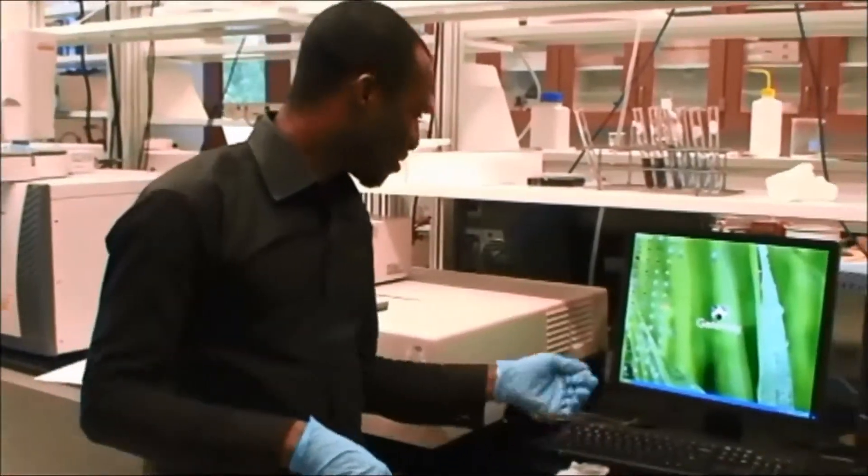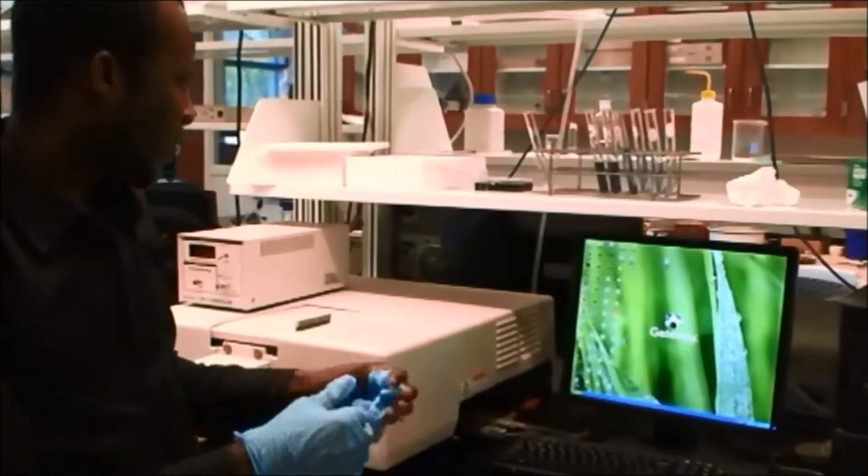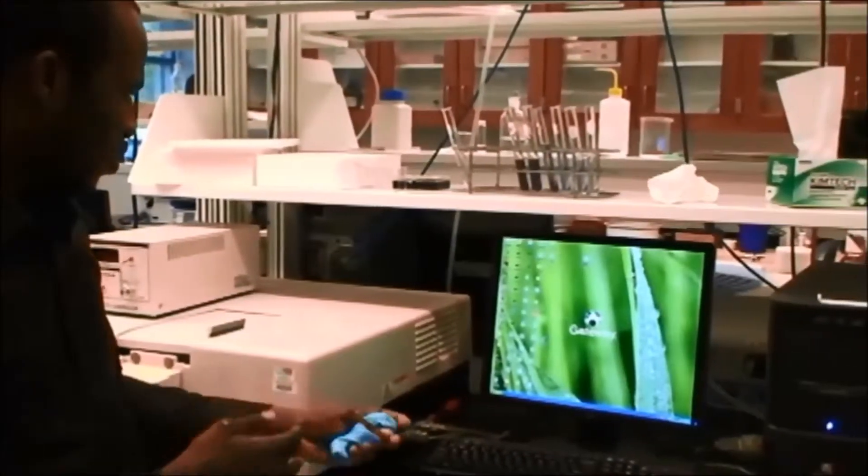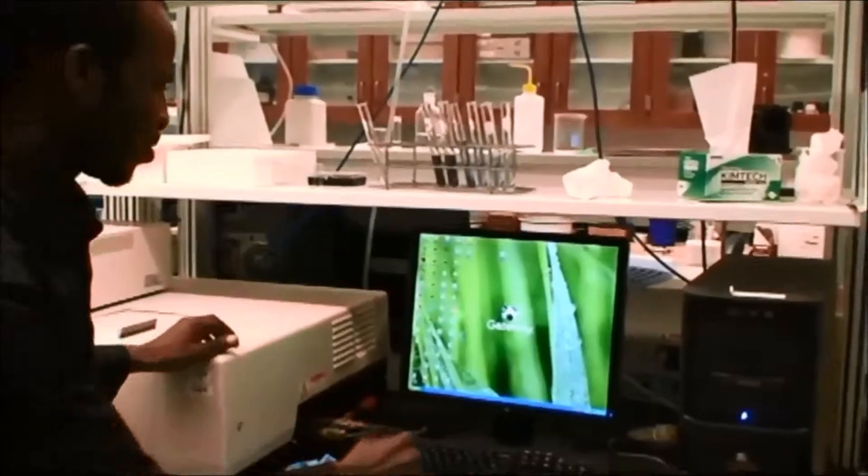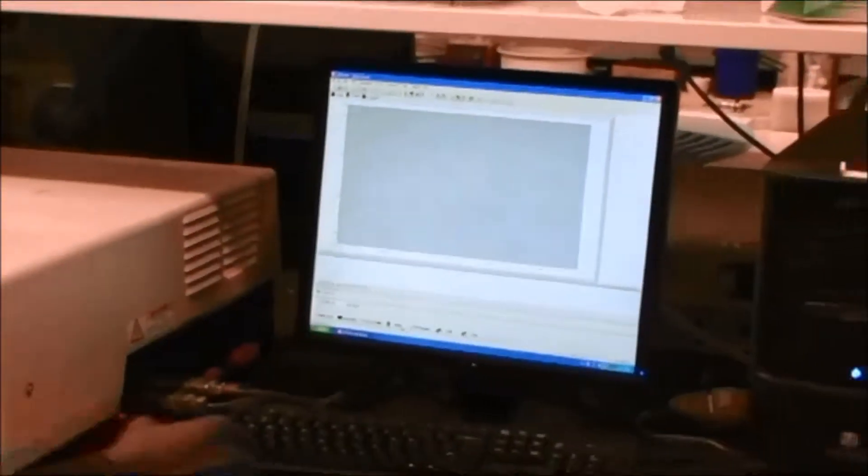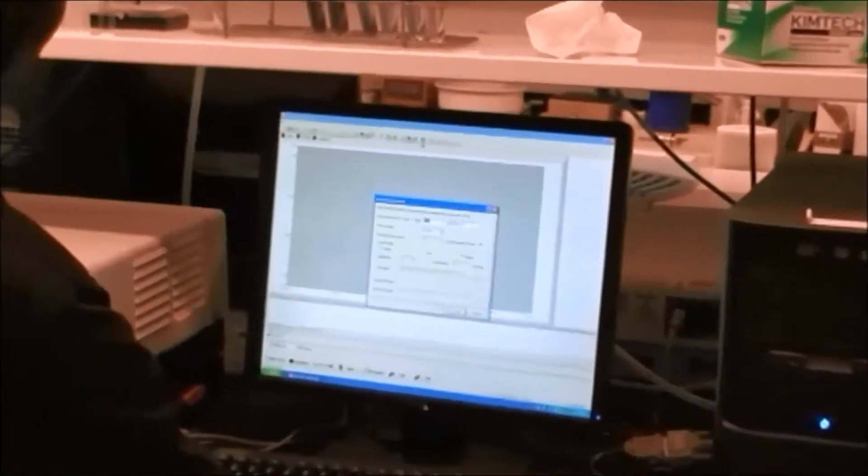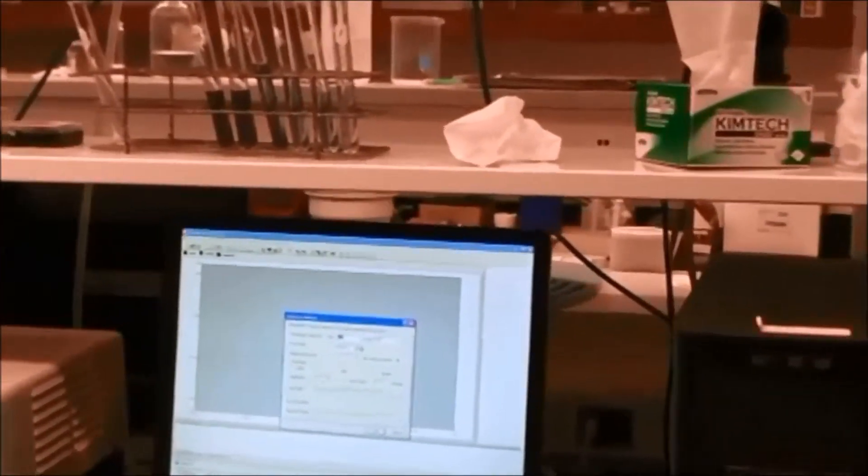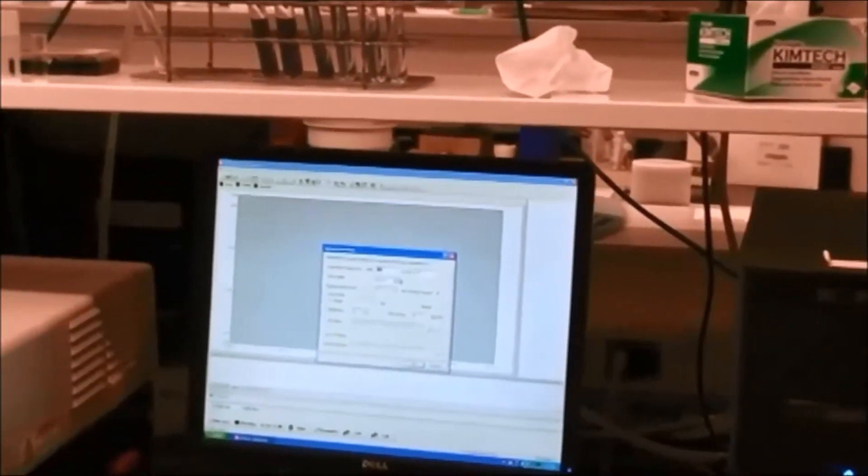After you've done that, you can now go to your machine where your software is. In this case, our software is UV Pro. Click on the UV Pro and allow it to load. Then after that, you have to connect everything to make sure that everything is in line. After you've done that, go to your method. This allows you to put in the wavelength range that you want to scan your sample on.